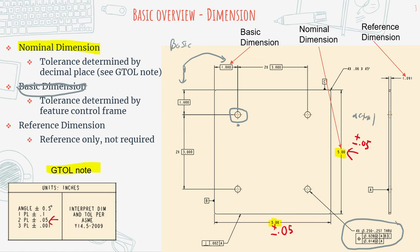The nominal dimension is the actual dimension, and your basic dimension is your theoretical dimension. We use basic dimensions whenever a dimension is going to be theoretical and the actual location or size is held to something else — such as your feature control frame.